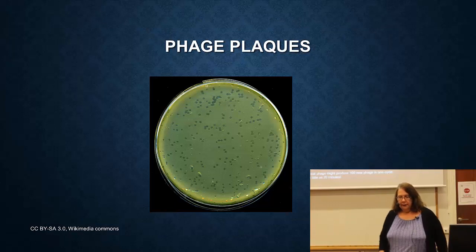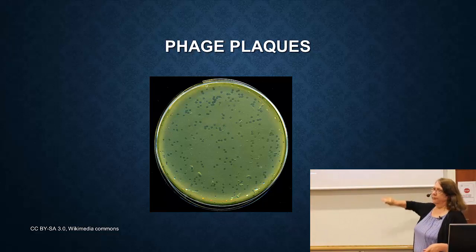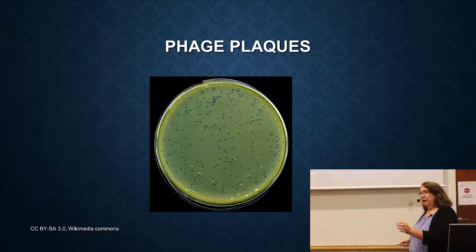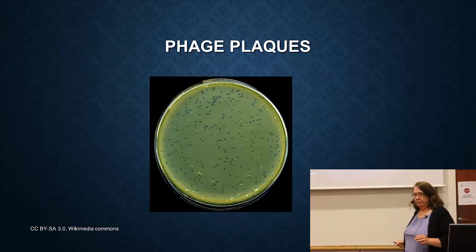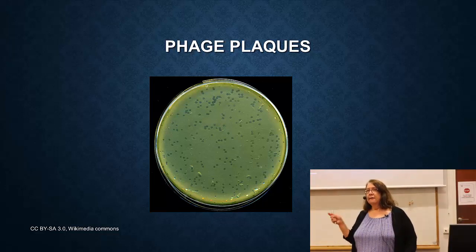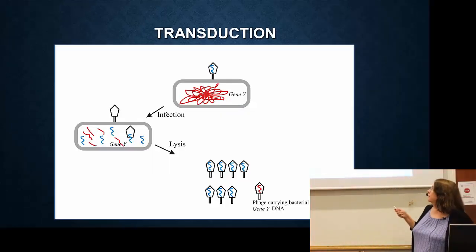If you want to see what these look like in the lab: on this plate you have a layer of bacteria growing - it's all cloudy. What you can see are little holes where a phage infected and killed all the bacteria in that area. The reason I'm telling you about this - first, these phages can spread antibiotic resistance by a mechanism called transduction.